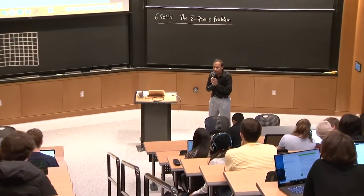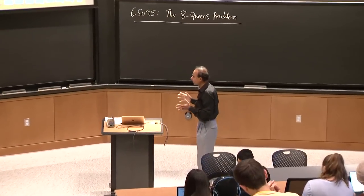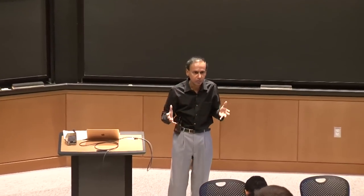Today we're going to look at a classic puzzle called the eight queens puzzle. It's very easy to describe. I'll write down the rules in case you don't know chess and how a queen moves on a chess board. But before I get into that, I wanted to mention that the programming paradigm we're going to be looking at today is one of exhaustive enumeration.